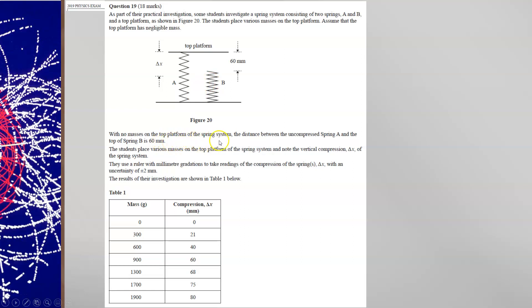With no masses on top of the spring system, the distance between the uncompressed spring A and spring B is 60 millimetres. That's shown here. It's often worth highlighting annotations on the diagram. The students place masses on the top platform of the spring system and note the vertical compression delta x of the spring system.